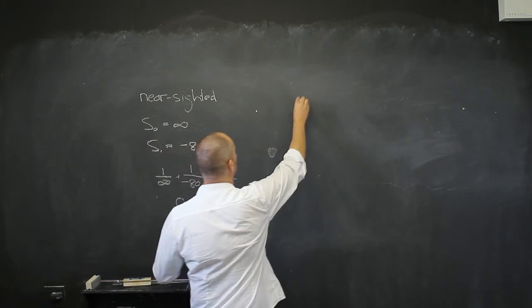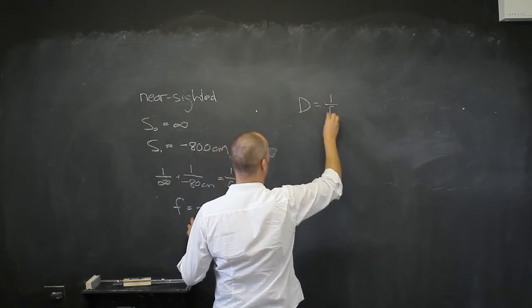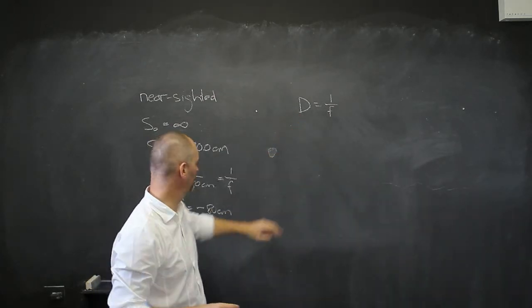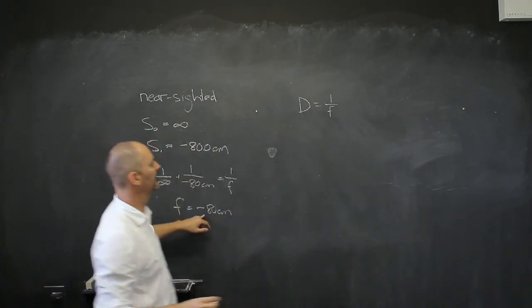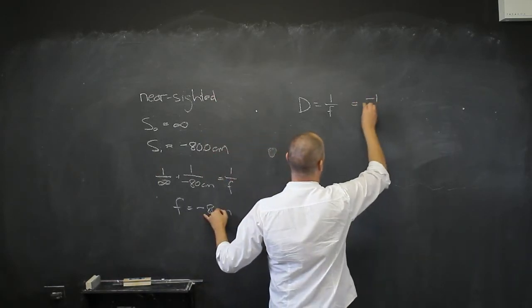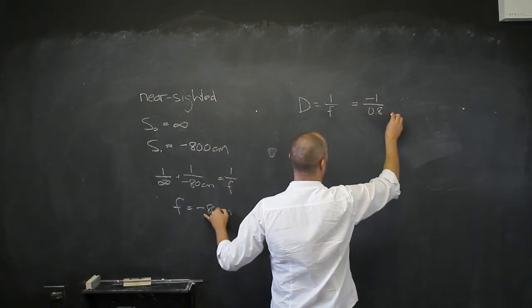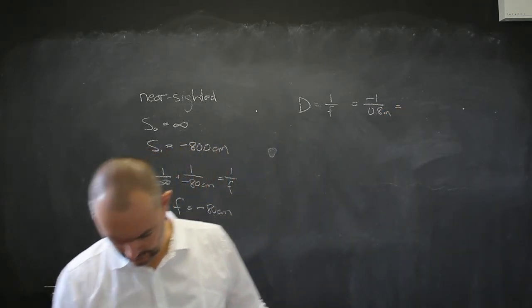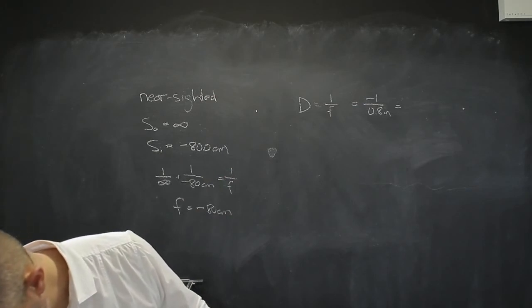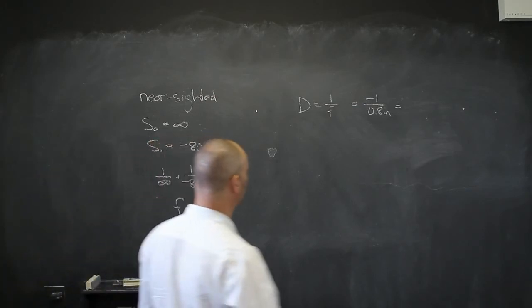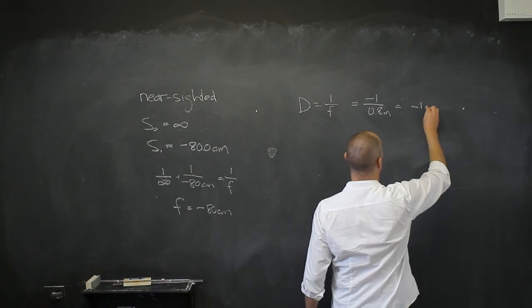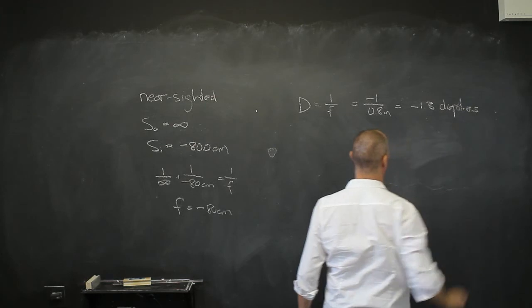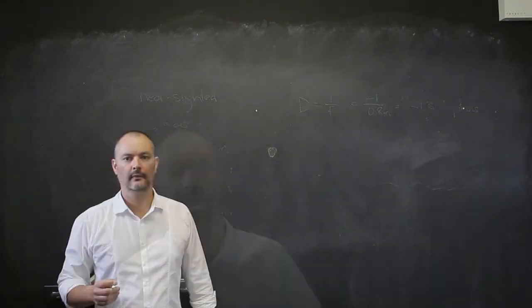And what diopters does this lens have? The diopters of the lens is just one over f. But remember, this diopters uses SI units. So it's got to be negative 0.8. So that's going to be negative 1 over 0.8 meters. And the diopters then is going to be negative 1.3 diopters. That is the strength of this lens that I'm going to use.